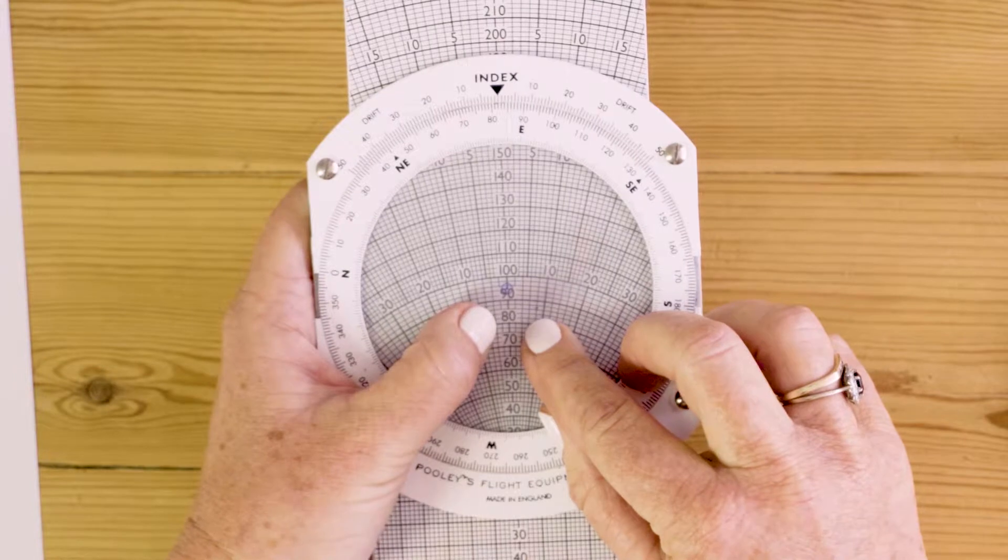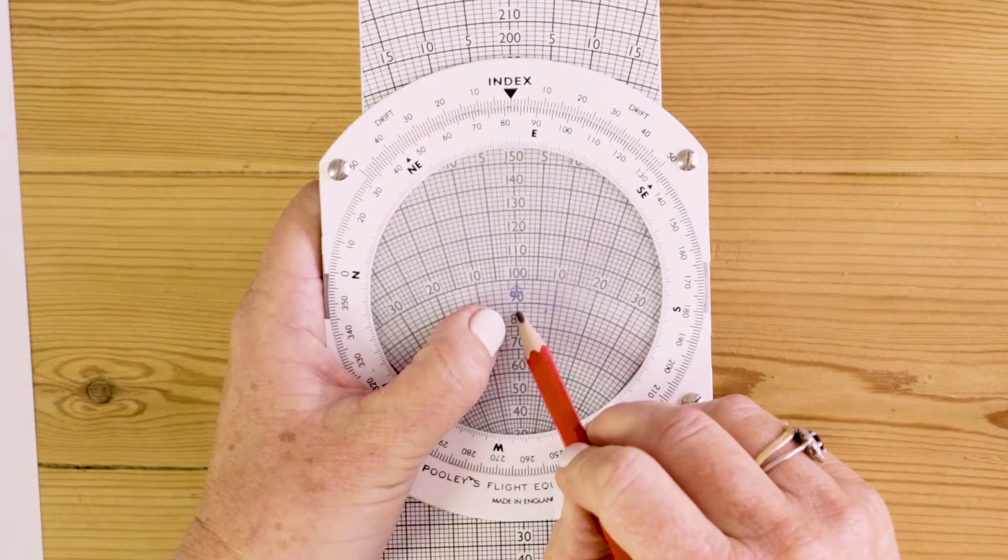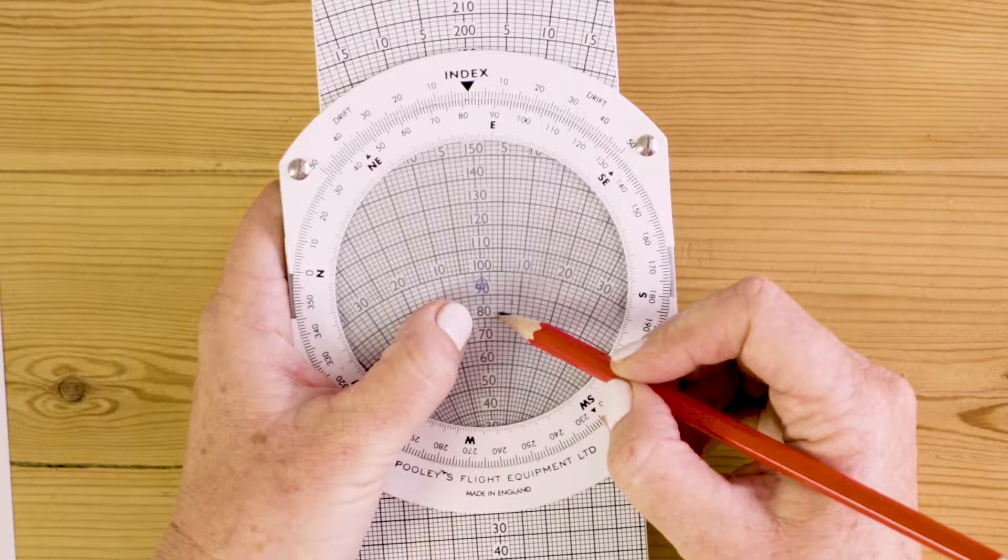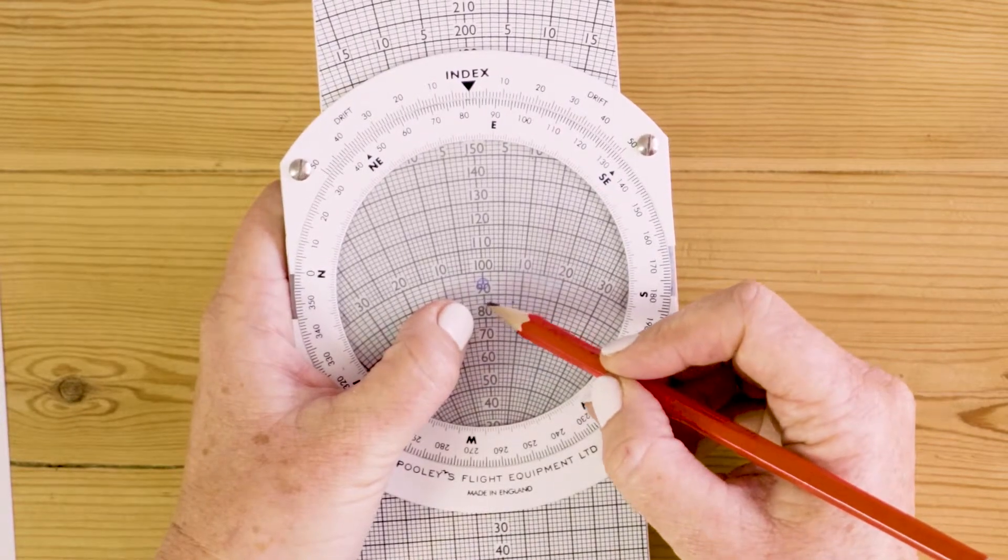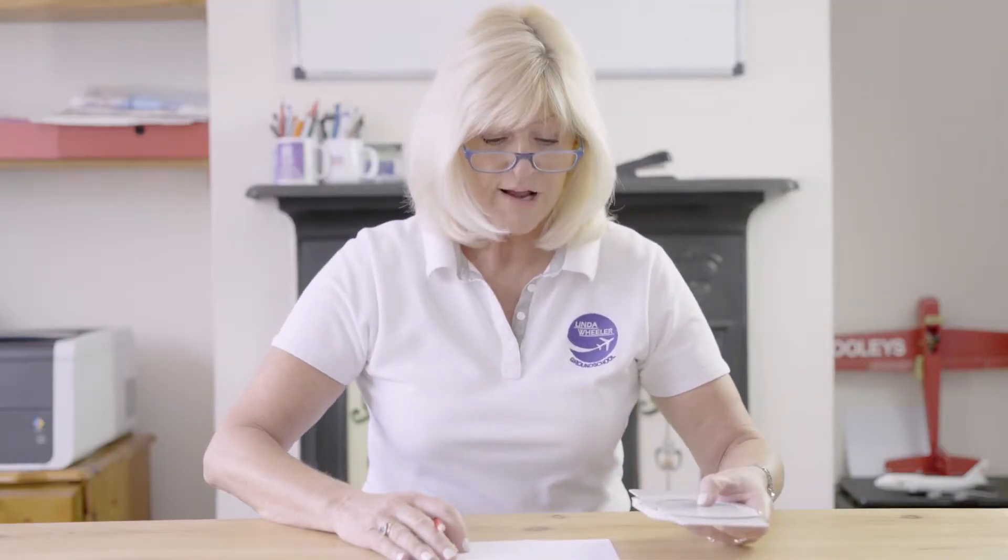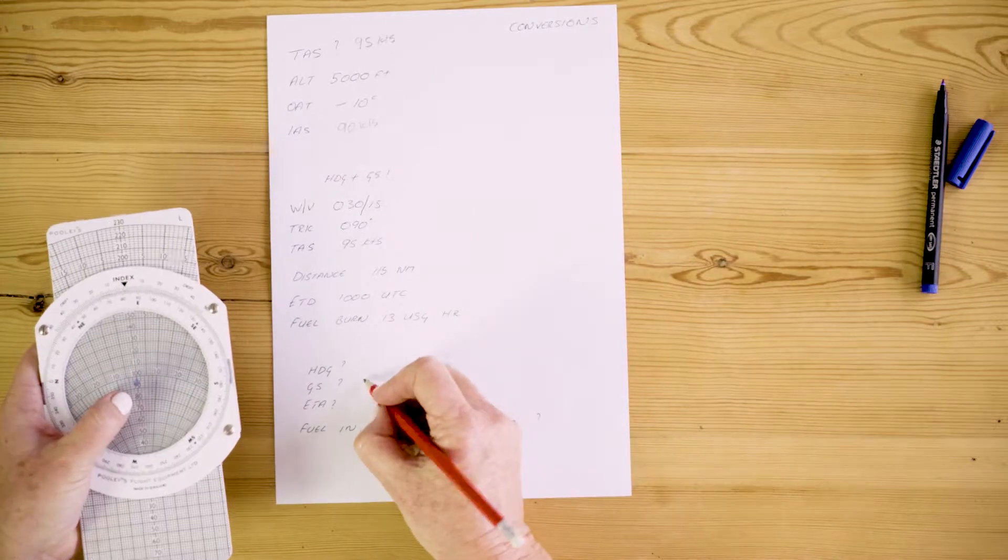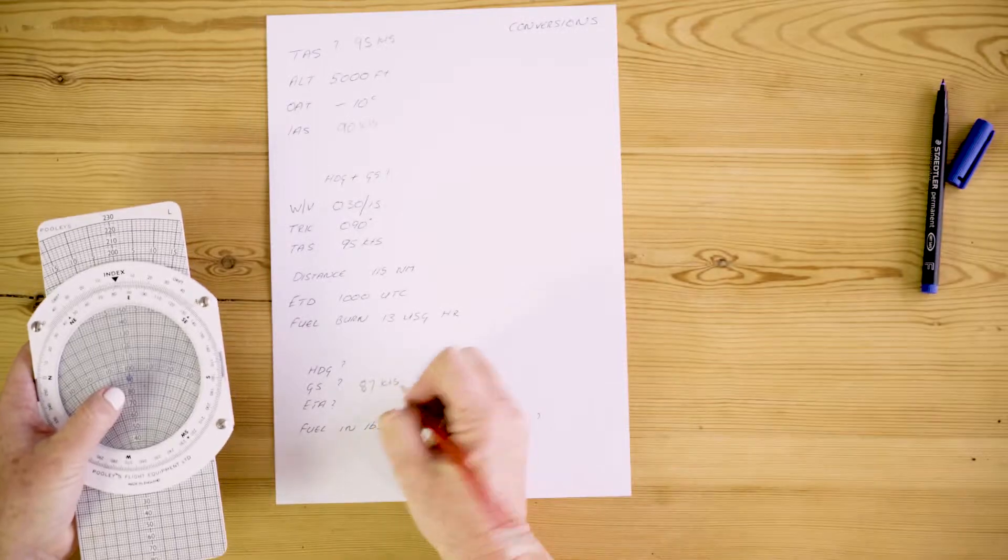Most importantly, where your dot has ended up here, we read our ground speed. The ground speed being 82, 84, 86, 87 knots. I now know my ground speed is 87 knots. Now I know my ground speed, I can work everything else out. We can't tackle the problem until we know our ground speed.